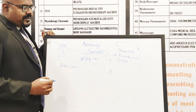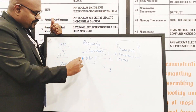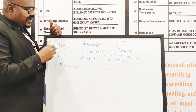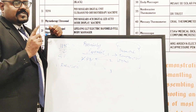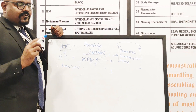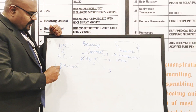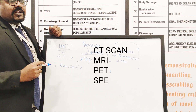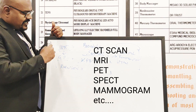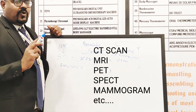Every biomedical engineer should know these three important facts: X-ray was invented in 1895, it was invented by a German physicist, and his name is Röntgen. This is the topic we need to concentrate on.